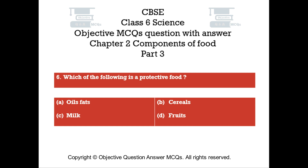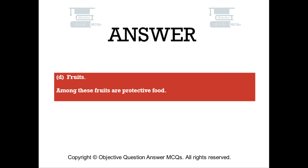Question number 6: Which of the following is a protective food? Option A: Oils and Fats. Option B: Cereals. Option C: Milk. Option D: Fruits. The right answer is Option D — Fruits. Among these, fruits are protective food.